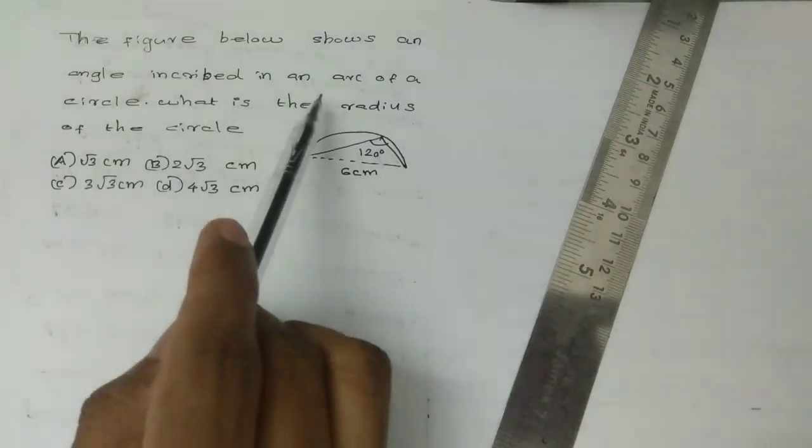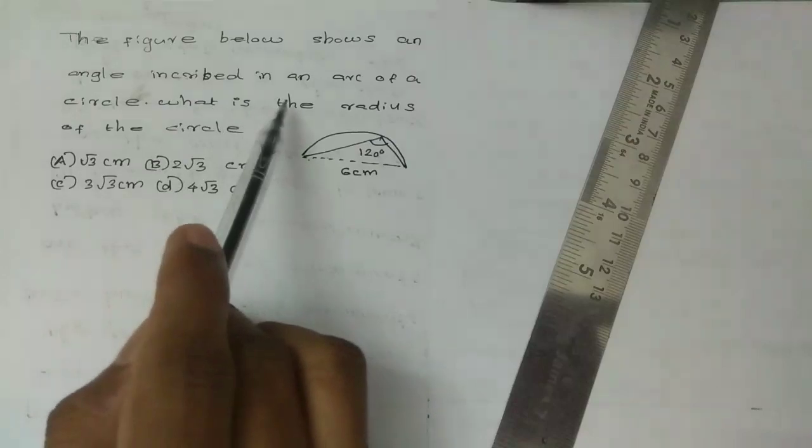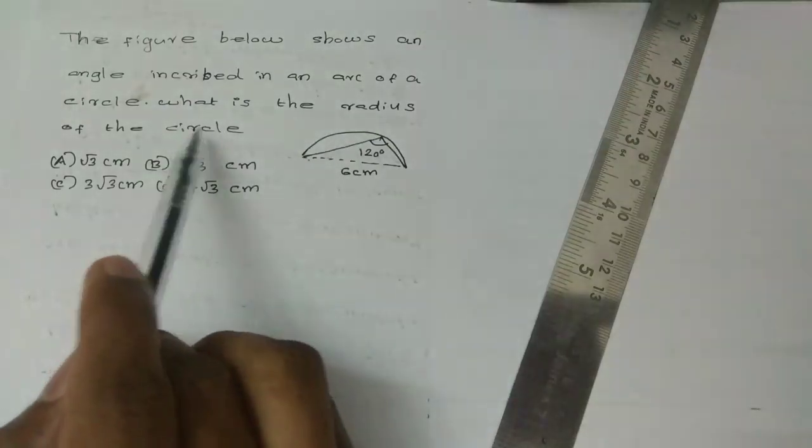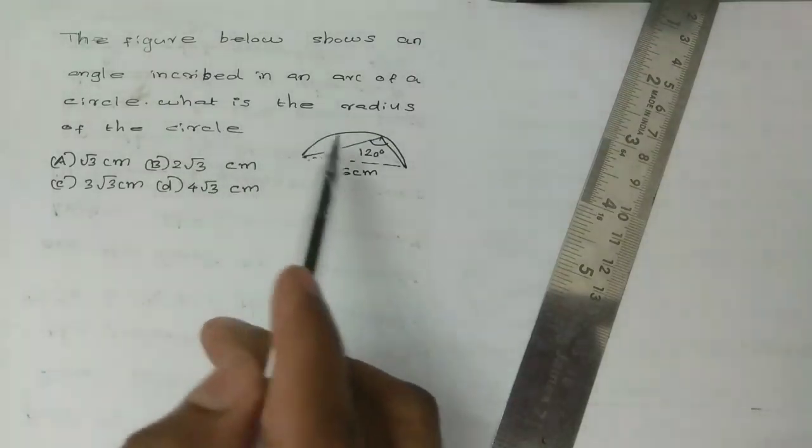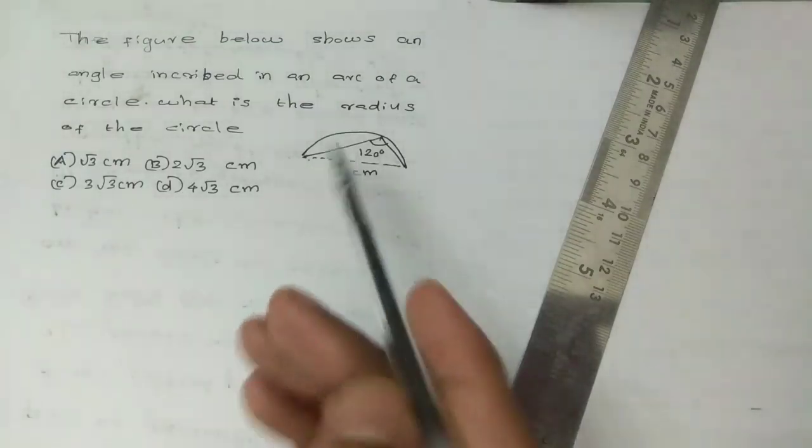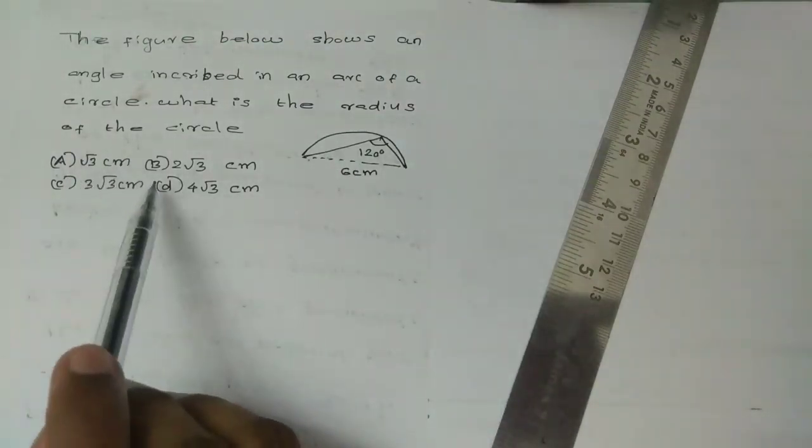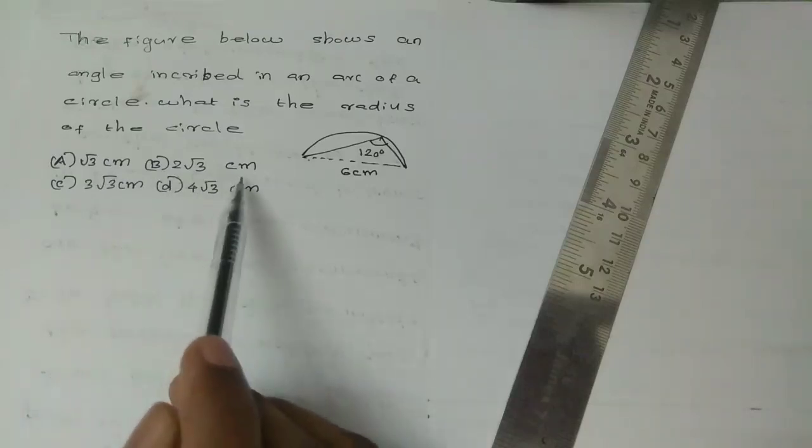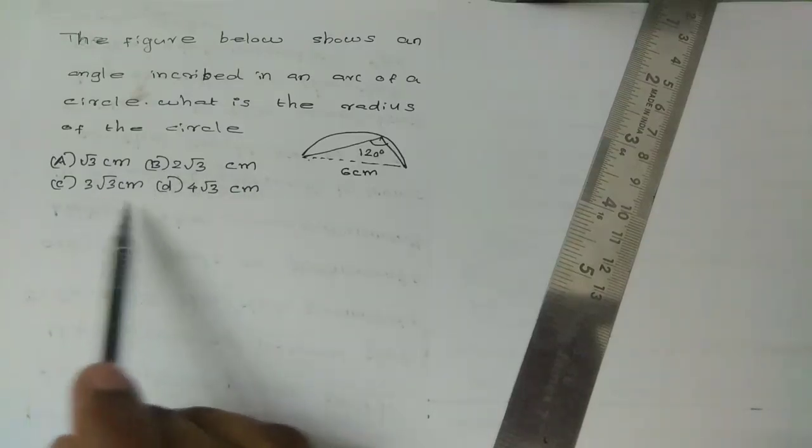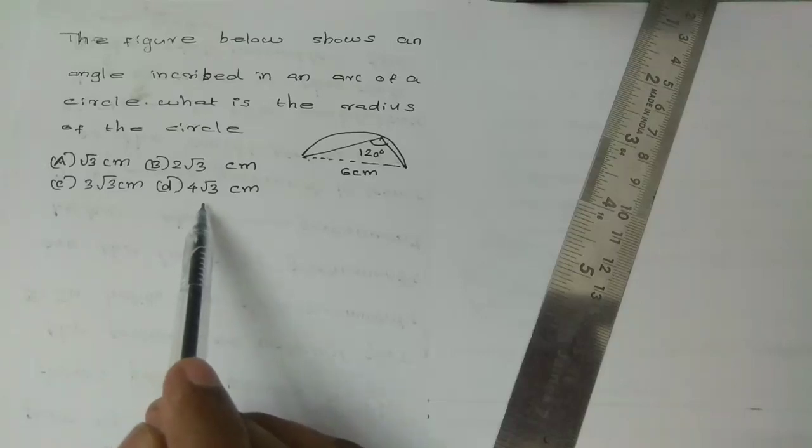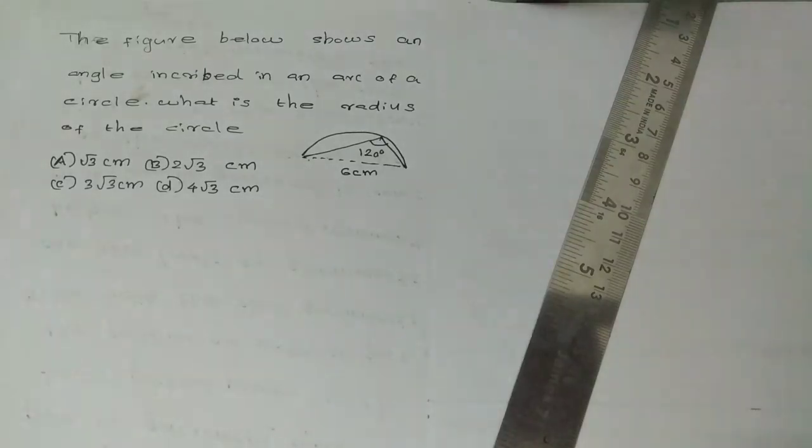The figure below shows an angle inscribed in an arc of a circle. What is the radius of the circle? Four options: Option A, root 3 cm. Option B, 2 root 3 cm. Option C, 3 root 3 cm. Option D, 4 root 3 cm. Here is the question we will discuss.